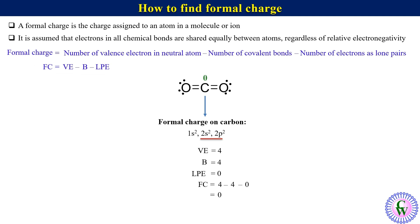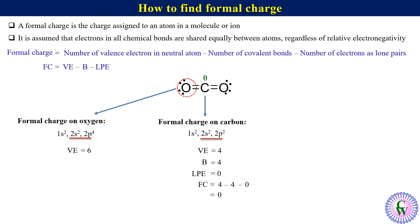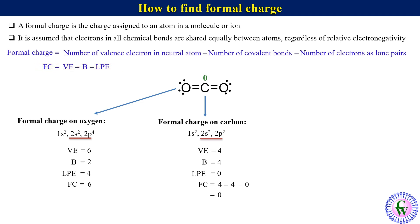Now, formal charge on the left side oxygen. The electronic configuration of oxygen is 1s², 2s², 2p⁴. We can see that there are 6 electrons in the valence shell, so Ve = 6. The number of covalent bonds around this oxygen is 2, so B = 2. There are 4 electrons as lone pairs, so Lpe = 4. Thus Fc = 6 − 2 − 4 = 0.